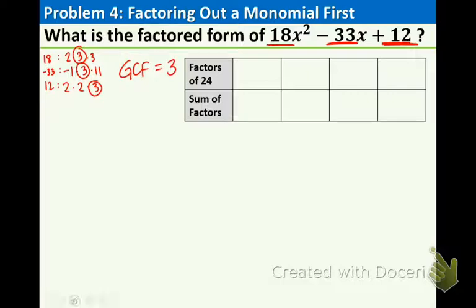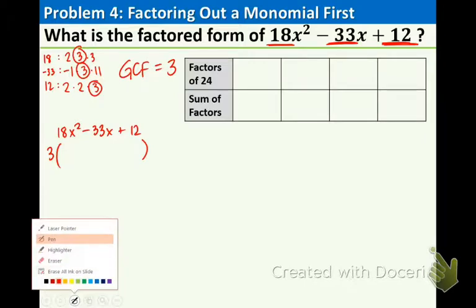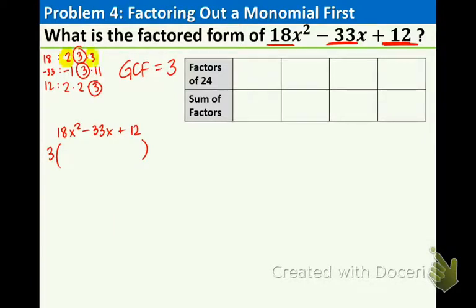That means we must factor out the 3. Take the 3, put it in front. The stuff that's left in the parentheses is actually what you did not circle in your GCF process. 2 and 3, negative 1 and 11, and 2 and 2. So 2 times 3 is 6, there's an x squared next to it. And negative 1 times 11 is negative 11x. And 2 times 2 is 4. So I got those numbers literally from the non-circled portions.